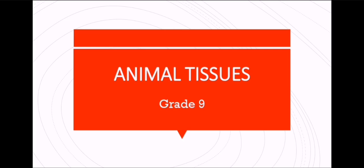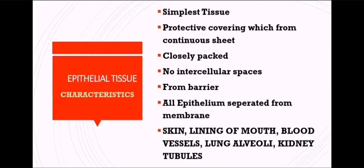Hello everyone, today I am again back with a new topic of biology which is animal tissues. Let's start first with what is epithelial tissue and what are the characteristics of epithelial tissue. It is the simplest tissue of all the kinds of tissue. It forms a protective covering.